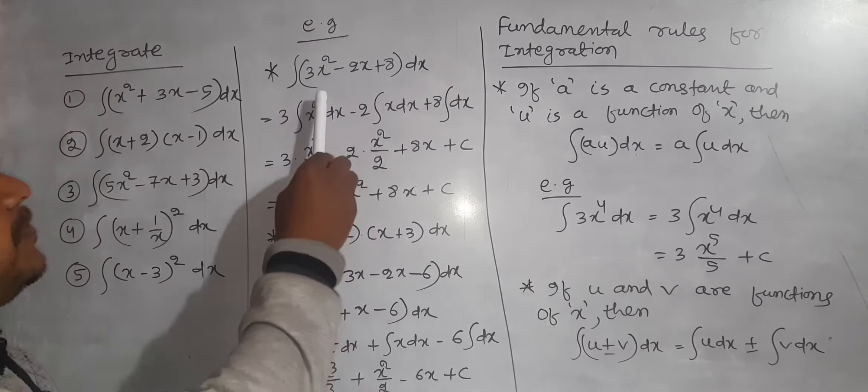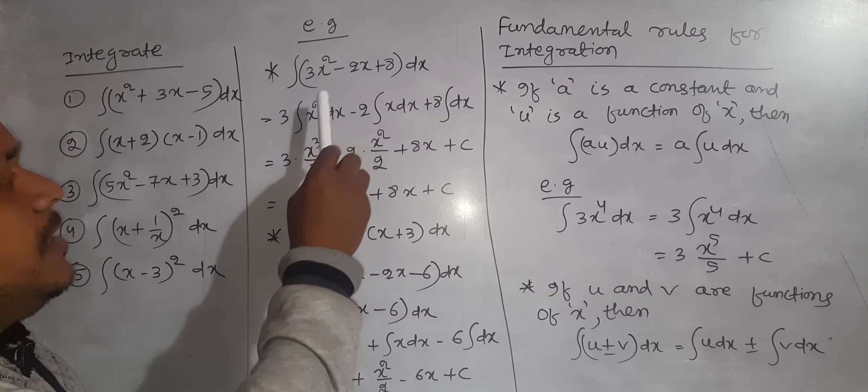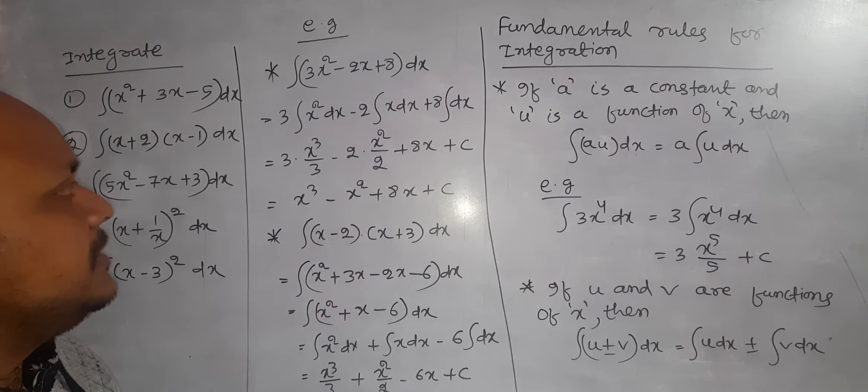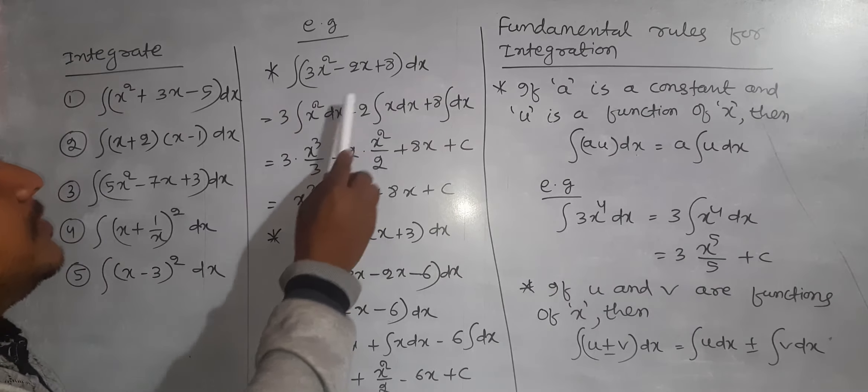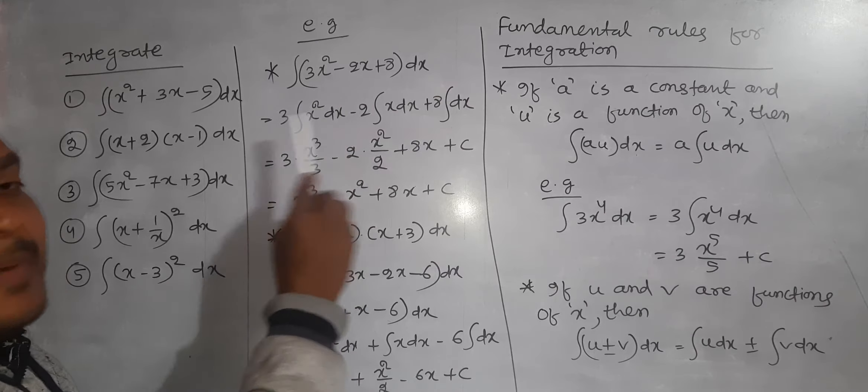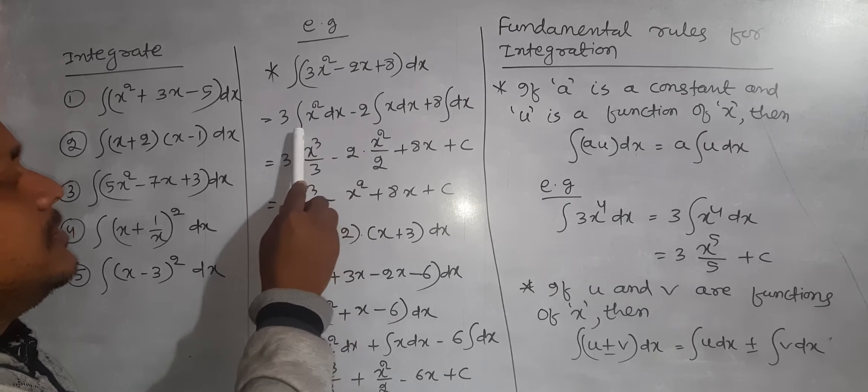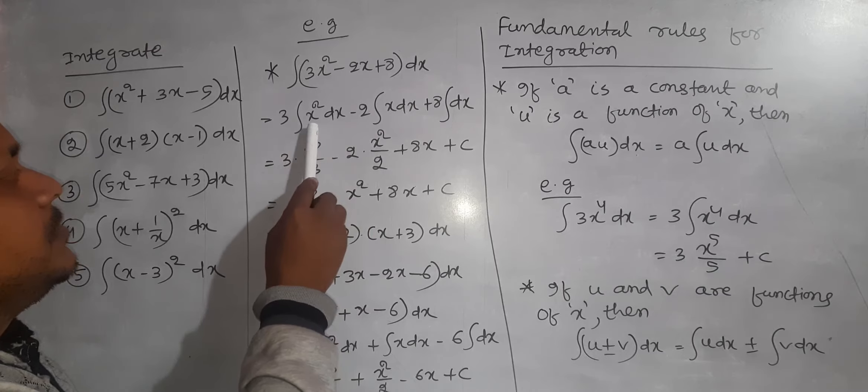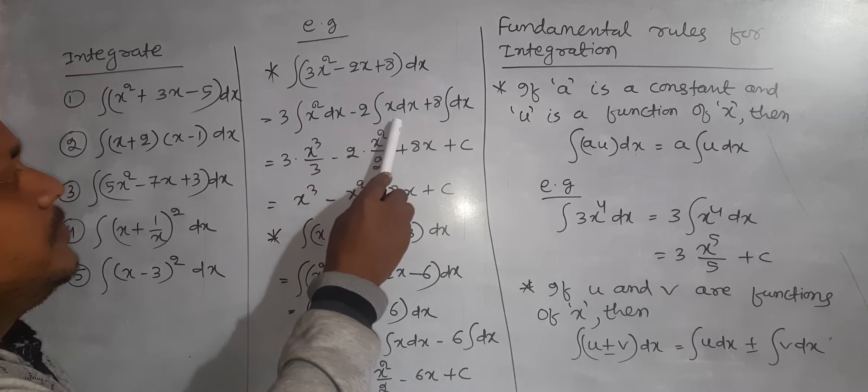Example: this is the polynomial of which we have to find out the integration. There are three terms. So, separate the terms as integration. This is 3x square, 2x, and 8.